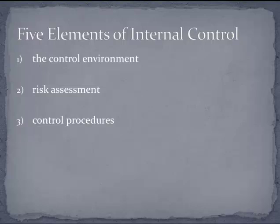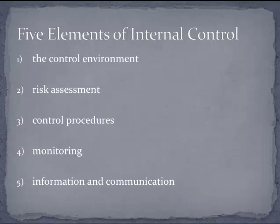The next element is monitoring. Once we put procedures in place, we have to actually look at them, monitor them, and see that we are making progress and accomplishing those objectives. Controls don't do any good if you aren't monitoring the results. Monitoring is making sure those procedures are being followed, and anything we learn from them is being communicated — which brings us to the last element, information and communication. Once we see the results, if there are things that need to change or be concerned about, we've got to communicate that to the right authorities and people in the company so that we can learn, improve, and make sure those objectives continue to be met.